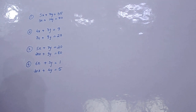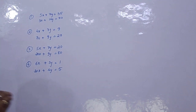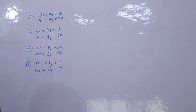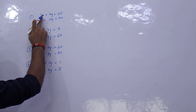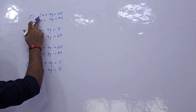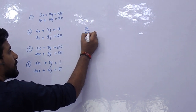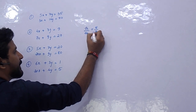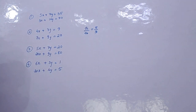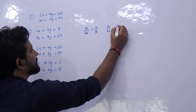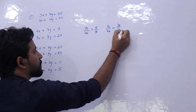For example, we are going to take 5x plus 7y equals to 35, and 3x plus 14y equals to 70. We are going to first check the ratio of the coefficients of x, y, and constant values. If we take the ratio of coefficient of x in both equations, that is a1 upon a2, it is 5 by 3. And b1 upon b2, the ratio of coefficient of y, is 7 by 14, which equals 1 by 2.